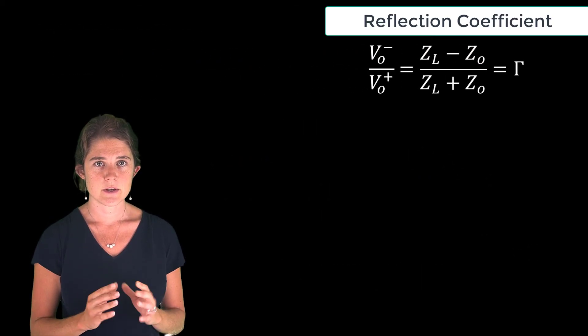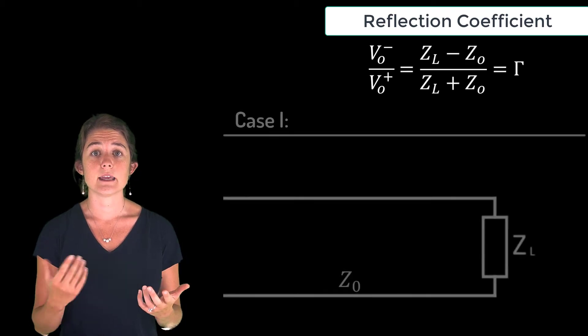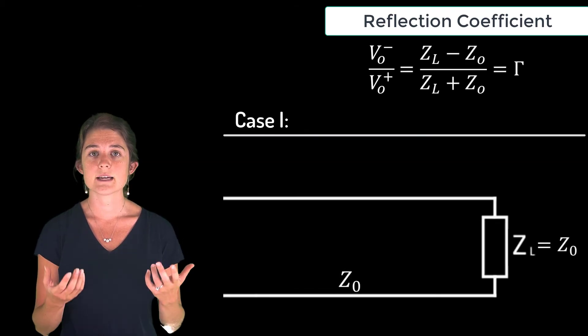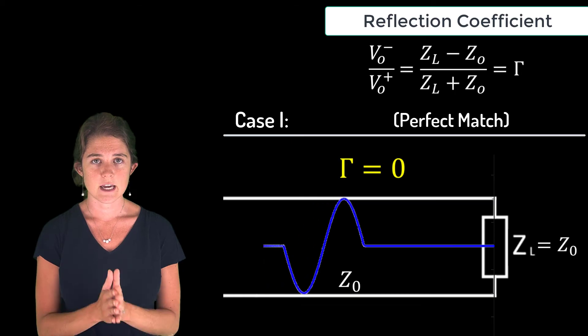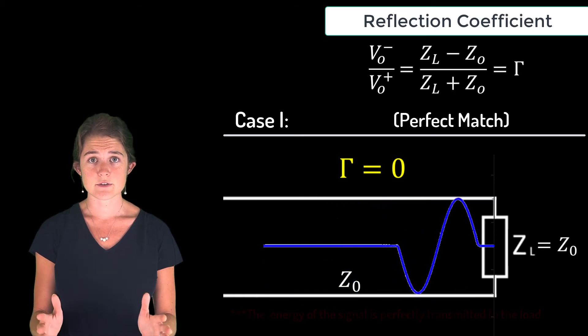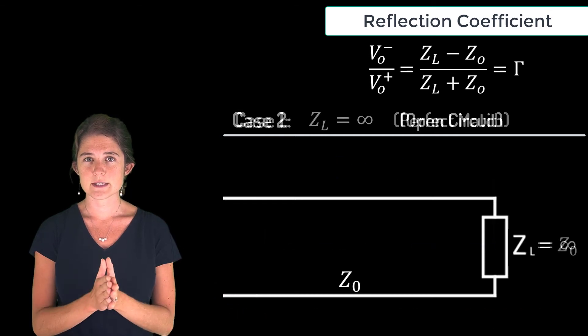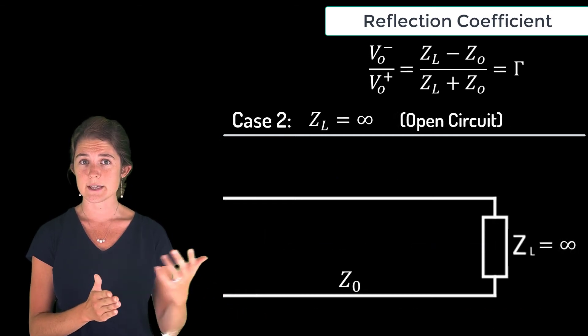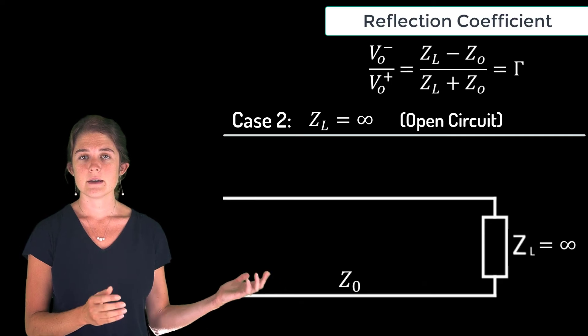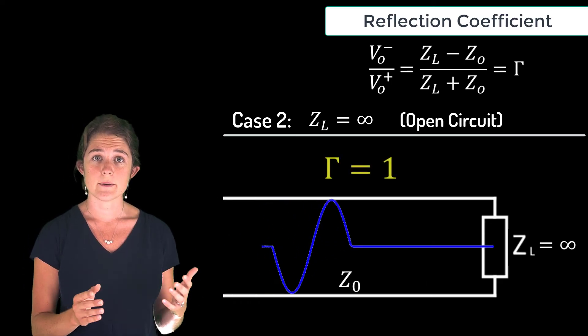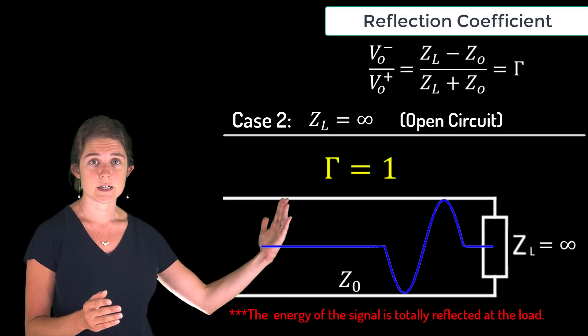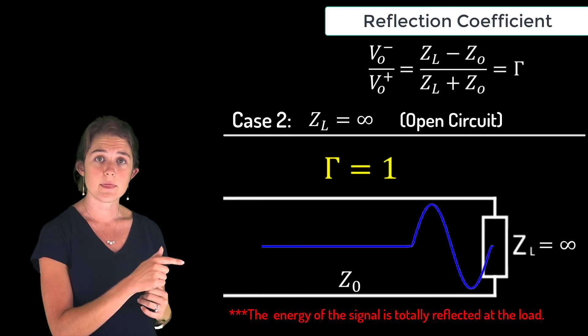Let's look at three special cases here. First, suppose zL equals z0. In this case you have a perfect match. Gamma equals 0, nothing is reflected, and all the signal flows into the load. Second, suppose zL is infinite. This is the open circuit scenario. Here gamma equals 1, and all the signal reflects back toward the source with nothing absorbed by the load.